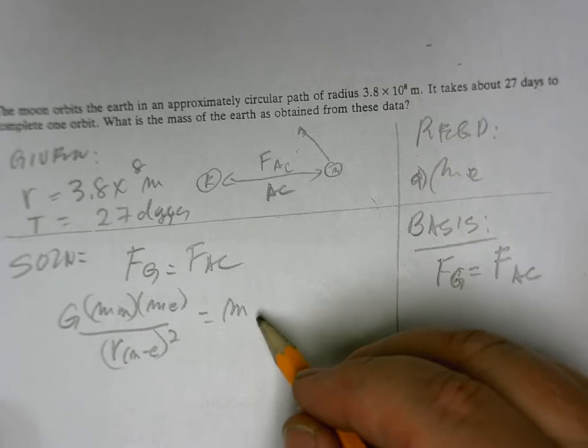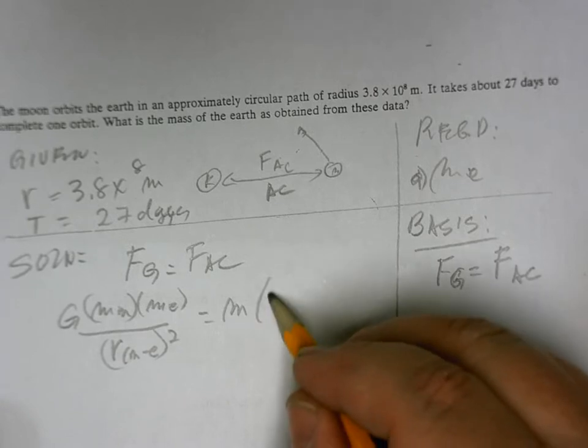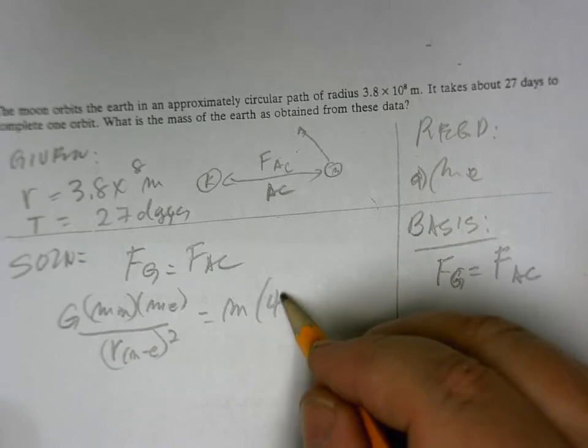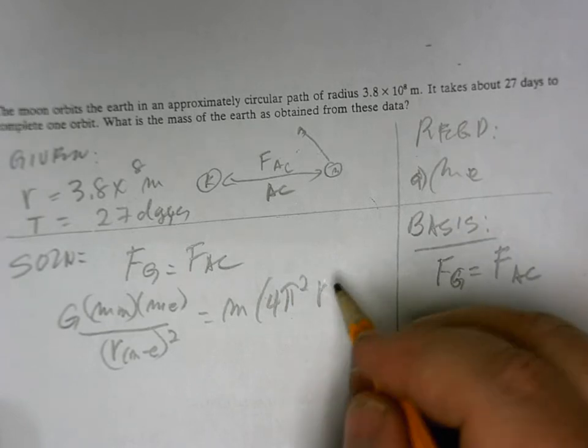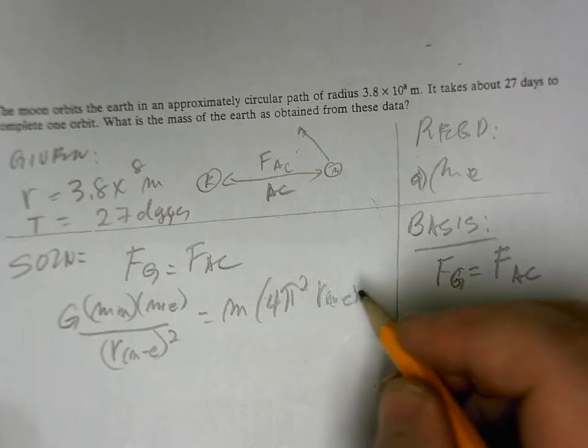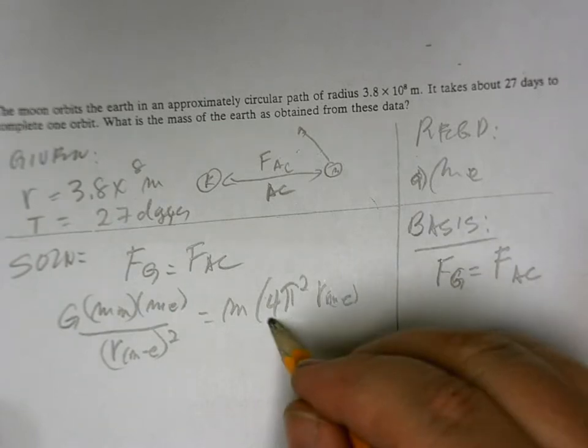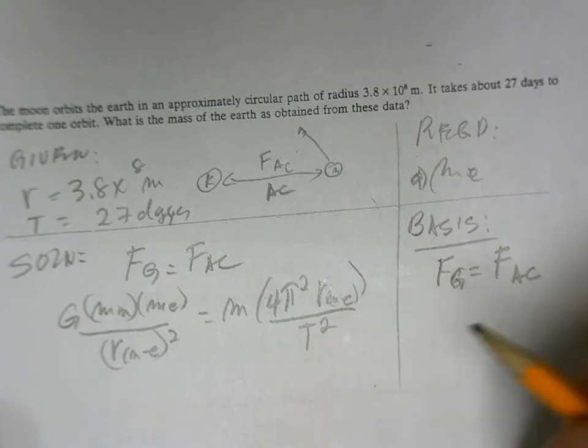And what is the acceleration? Look in your formula sheets. It's 4π squared times R, Moon to the Earth, again,